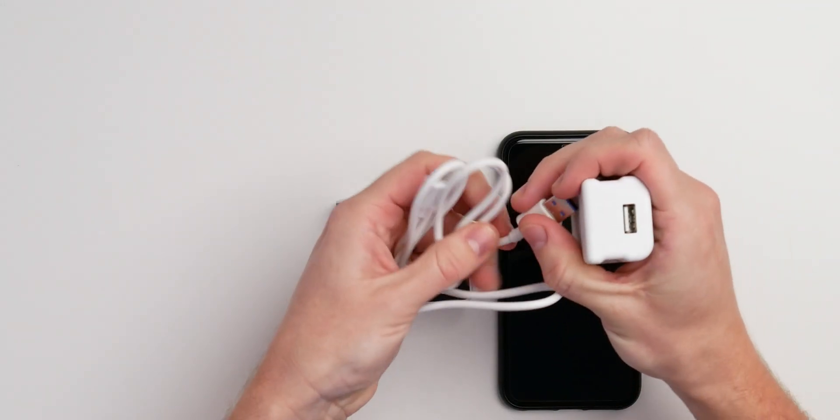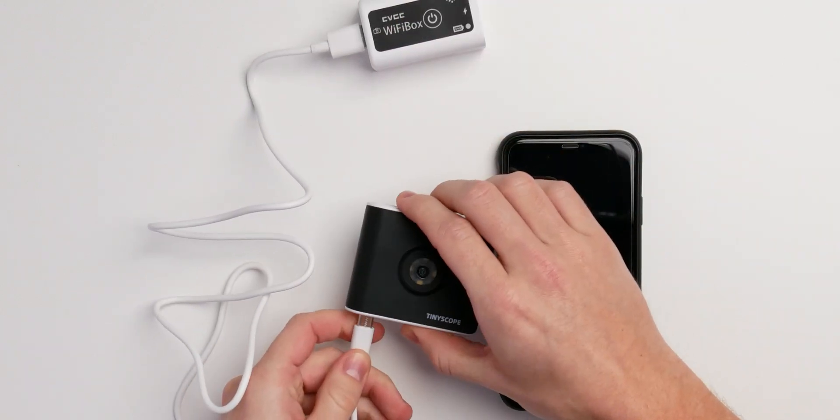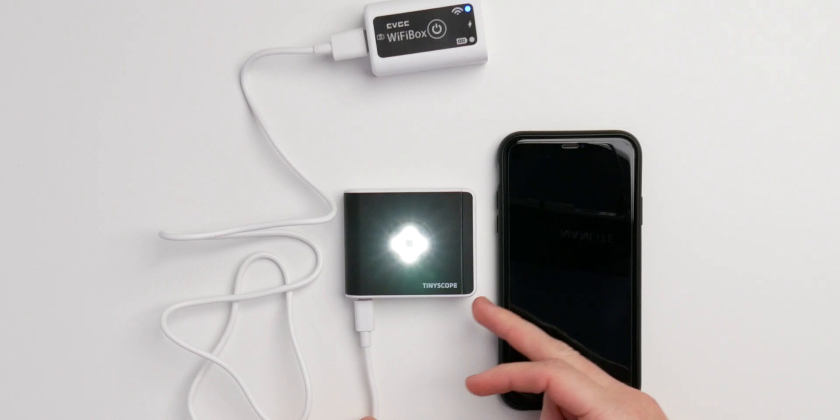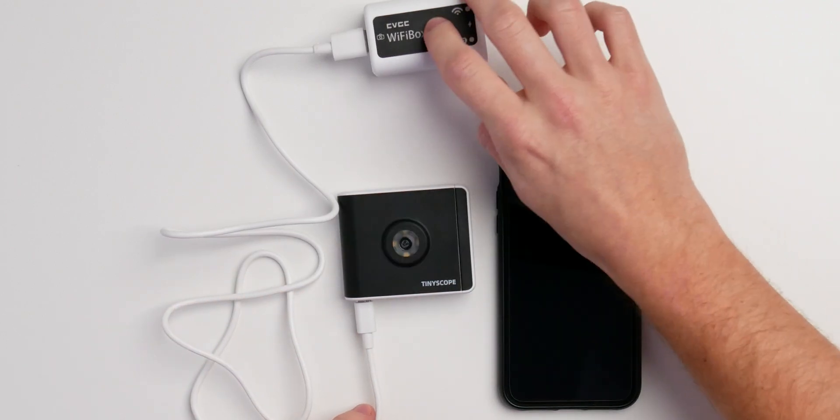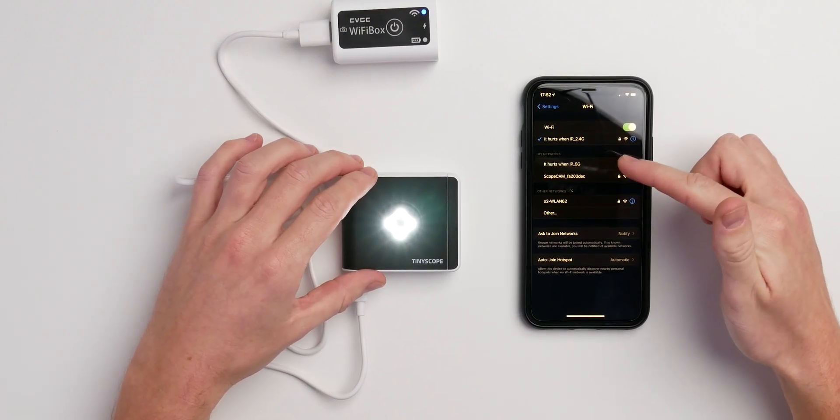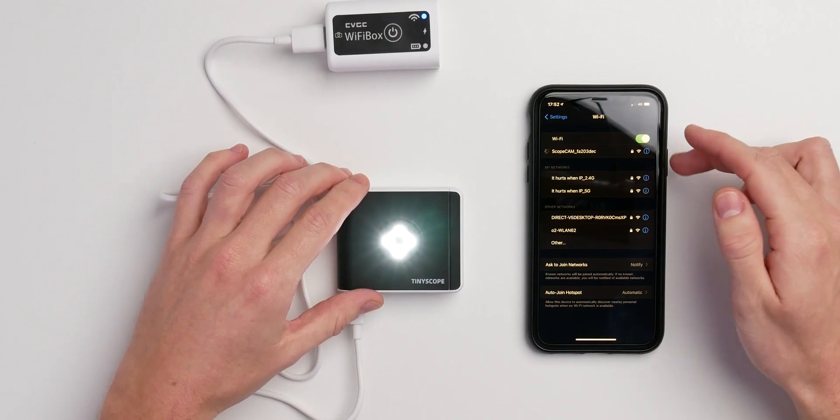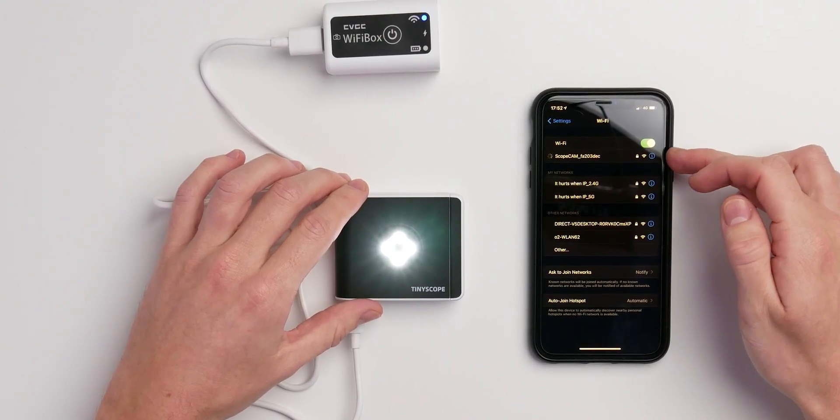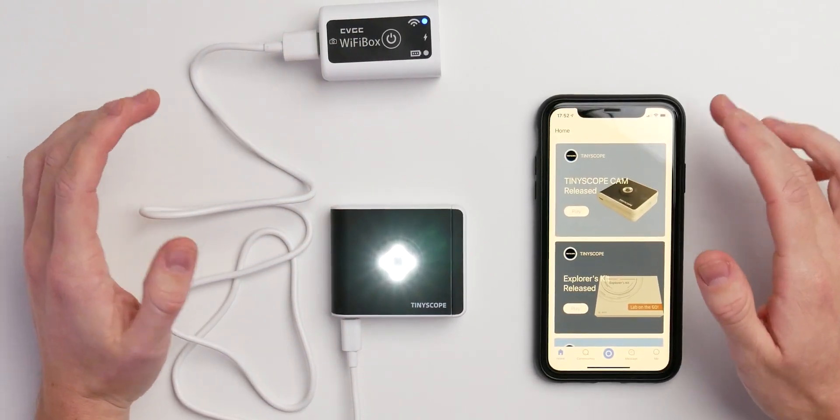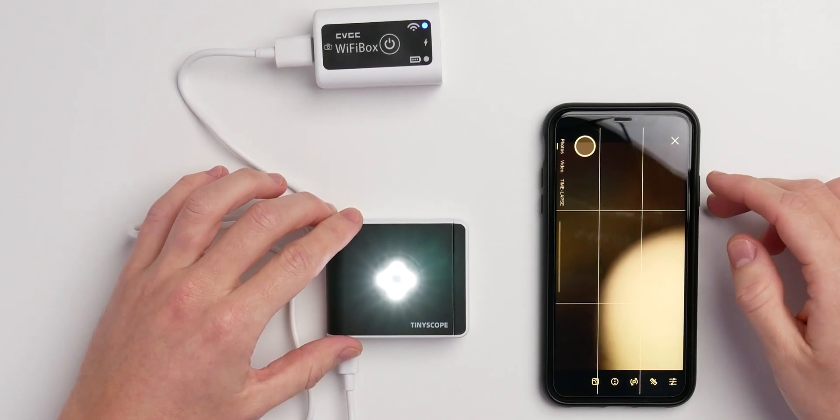So first thing is just connect the WiFi box to the TinyScope. And as soon as I'm turning it on, you will just probably be blinded by the lights. First thing we just need to do is connect to the WiFi box I have here, ScopeCam. And as soon as my WiFi and my iPhone here is connected to the WiFi box, you can just go to the TinyScope app you get for iOS and Android. And then we can just select the TinyScope.